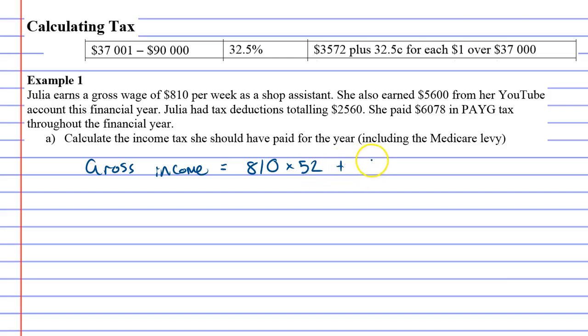So eight hundred and ten times fifty-two, plus the earnings from YouTube. She made five thousand six hundred from YouTube and eight hundred and ten dollars every week. So if we work it out: eight hundred and ten times fifty-two, plus the YouTube money of five thousand six hundred, comes to forty-seven thousand seven hundred and twenty dollars that she earned in this financial year.